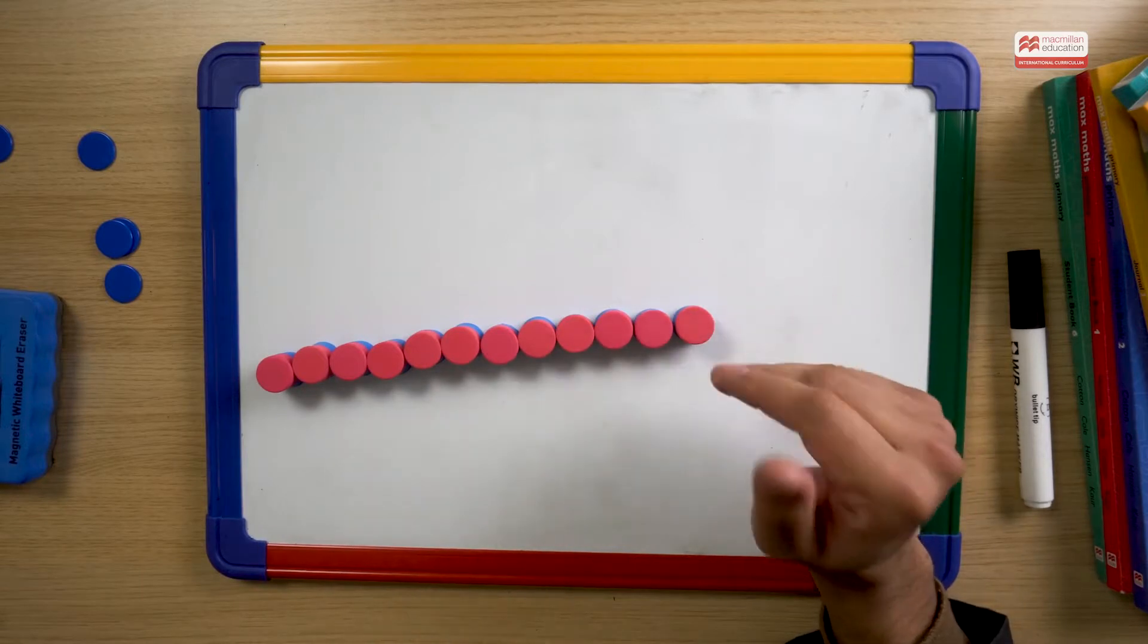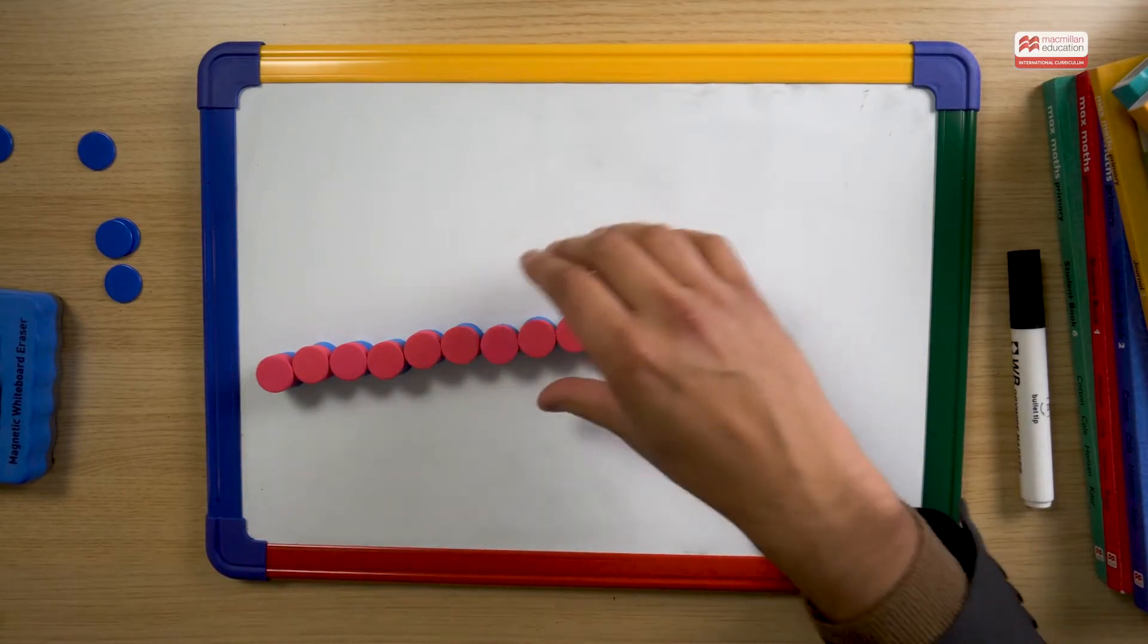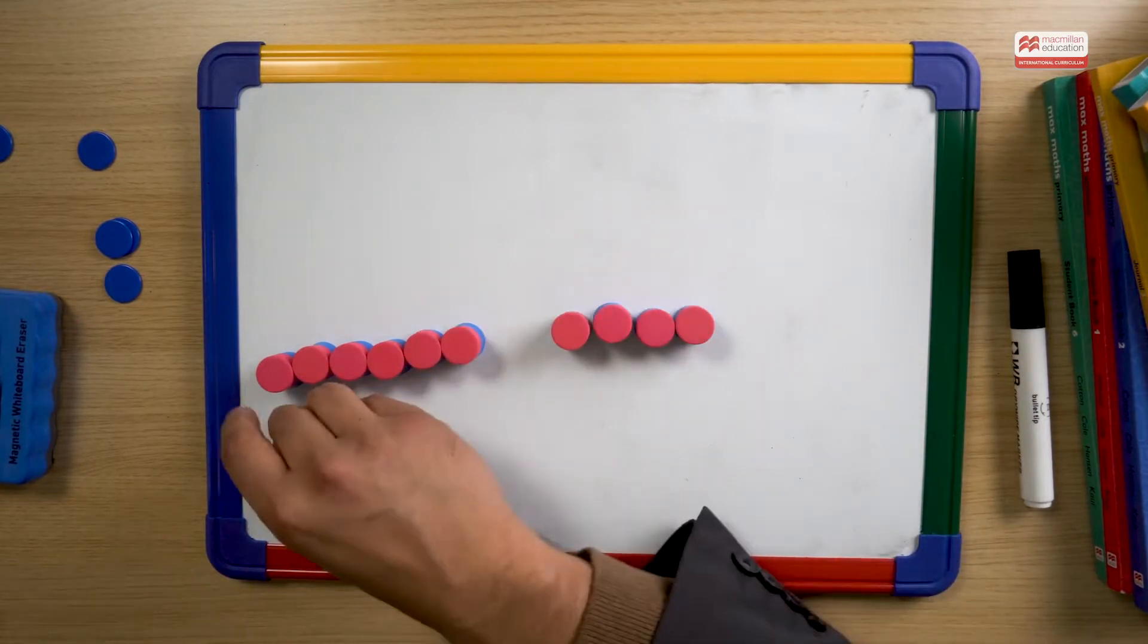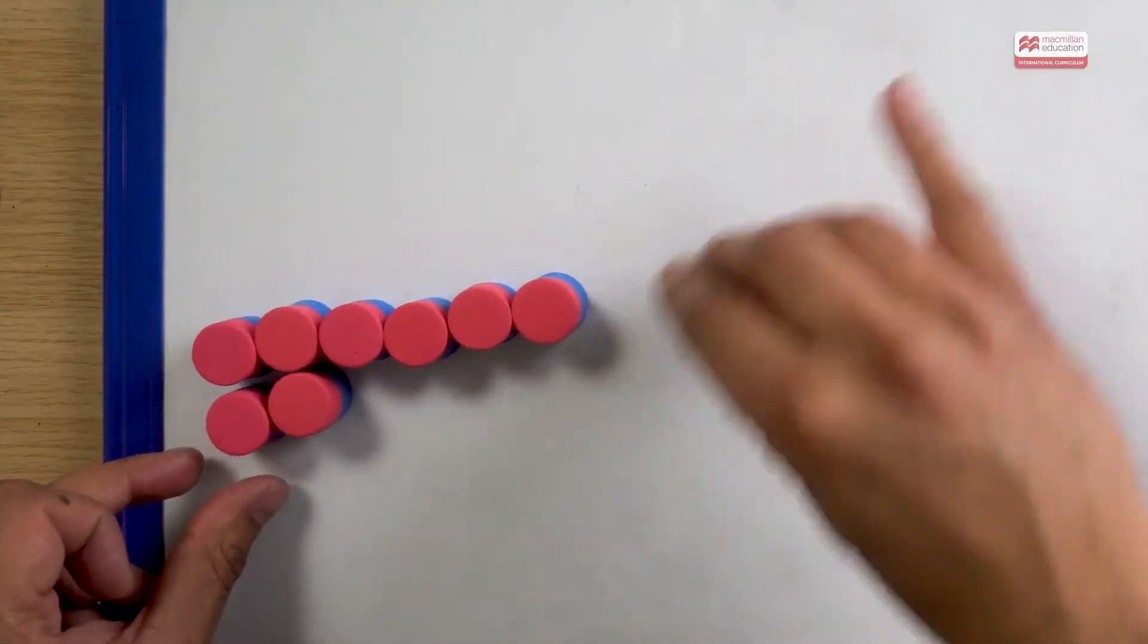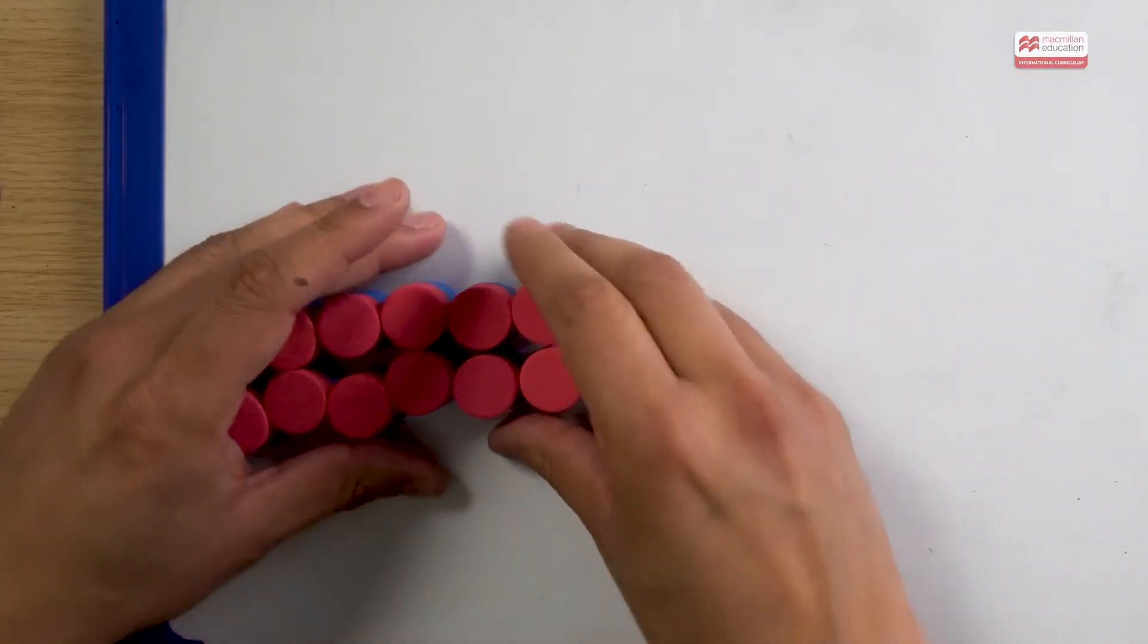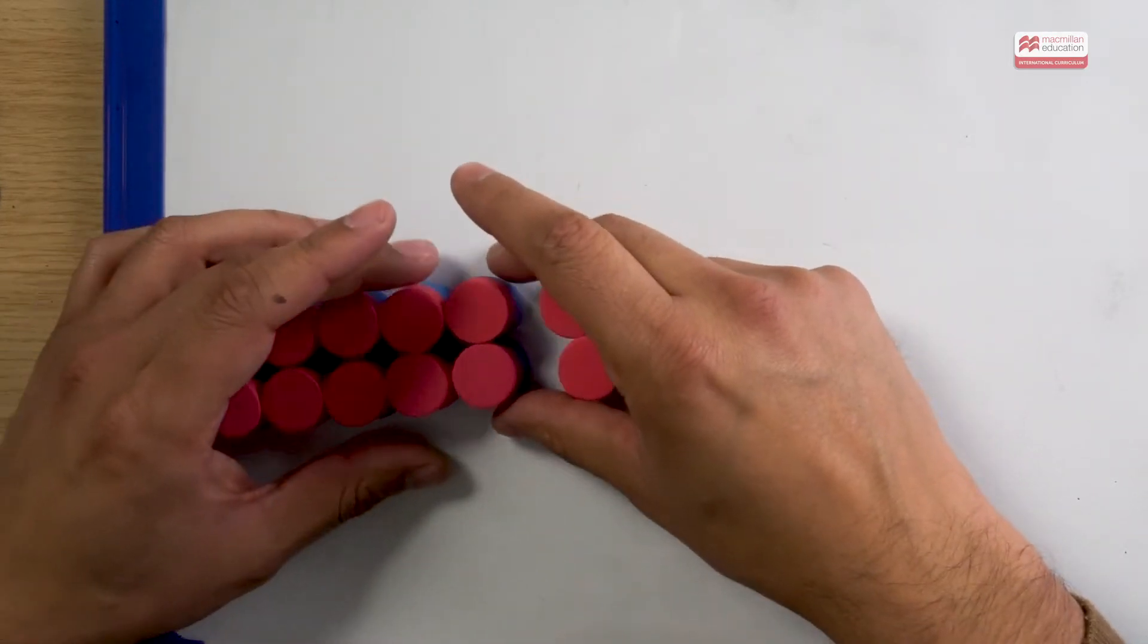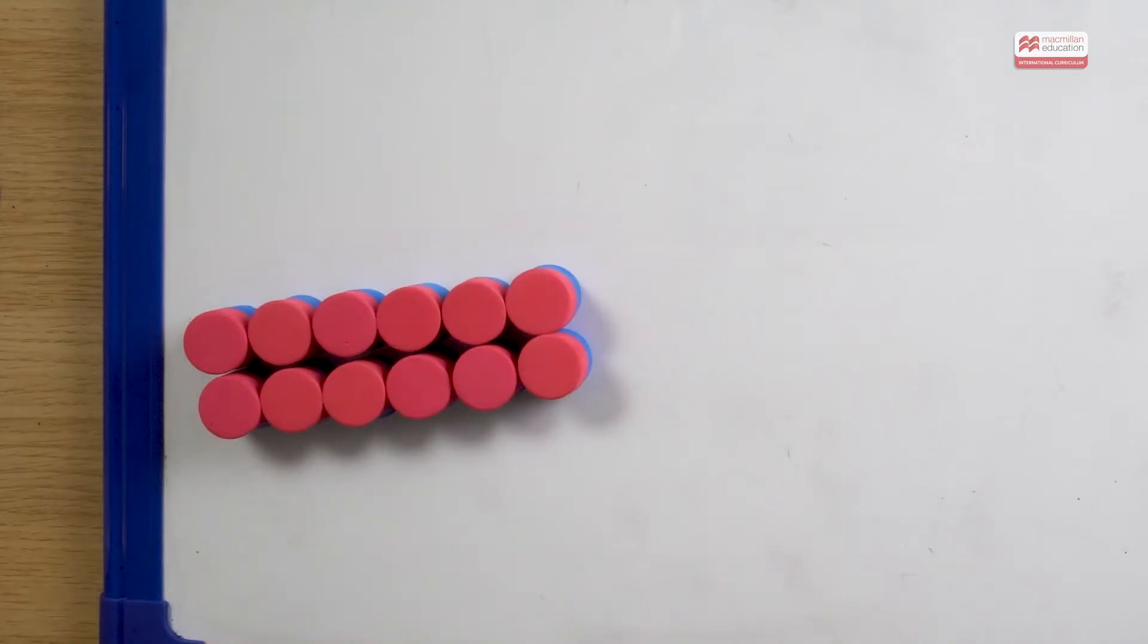So we had 4 and 3 as a factor, 12 and 1 as another factor. Are there any other factors of 12? Maybe some of our children will do something like this. Another rectangle. But this time the rectangle has 6 going across twice. So another factor of 12 is 6 and 2.